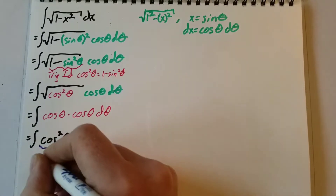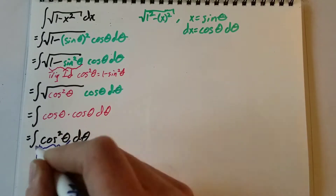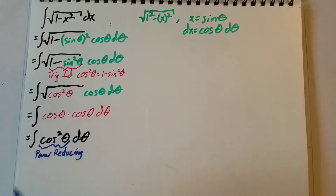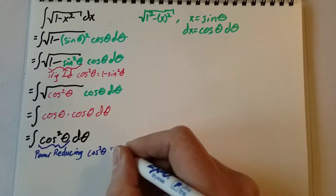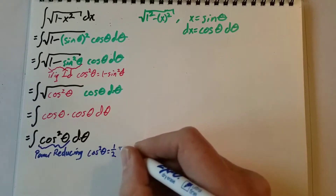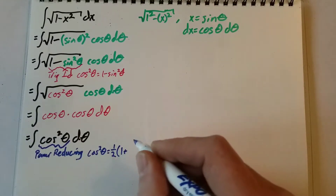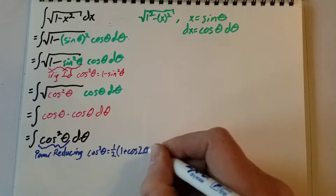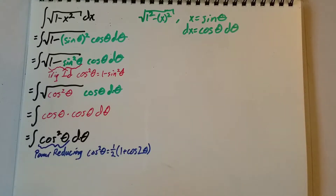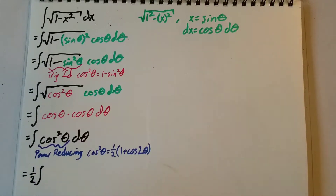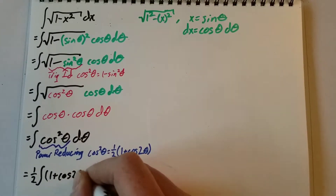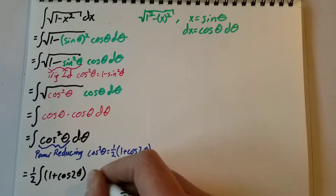Looking at this, we can use power reducing, which says that cosine squared theta equals one half times 1 plus cosine 2 theta. So we now have one half times the integral of 1 plus cosine 2 theta d theta.